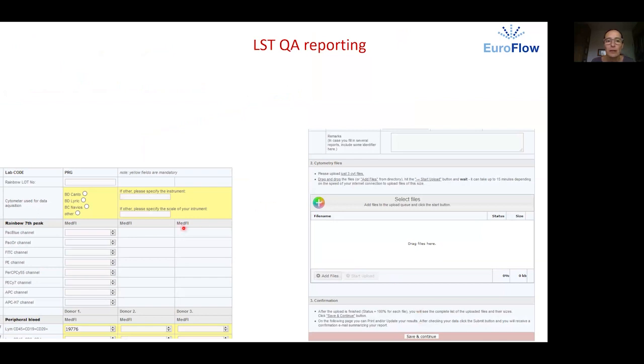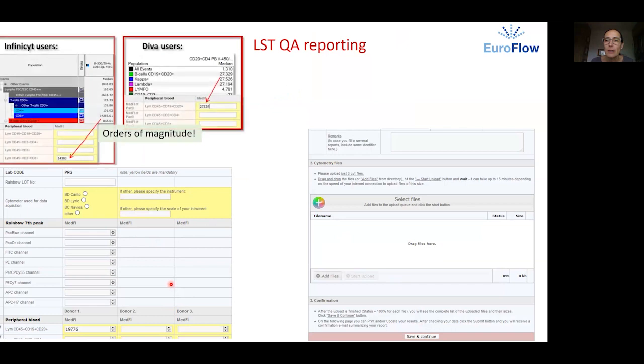When filling in the numbers into the report form. Be aware that Infinicyt uses decimal point to separate the whole numbers and diva uses comma to separate thousands. So while this is 163 in Infinicyt this is 27329 in diva. Often we find that you report means instead of medians because they are as a default there.